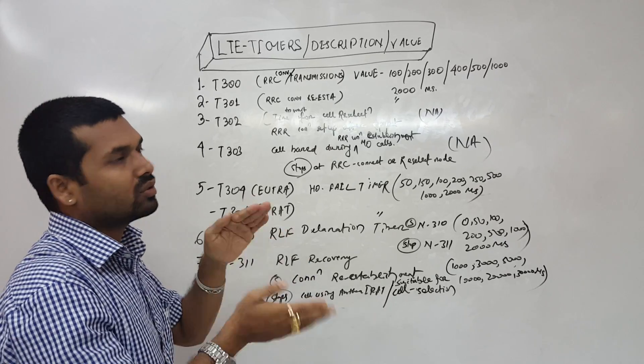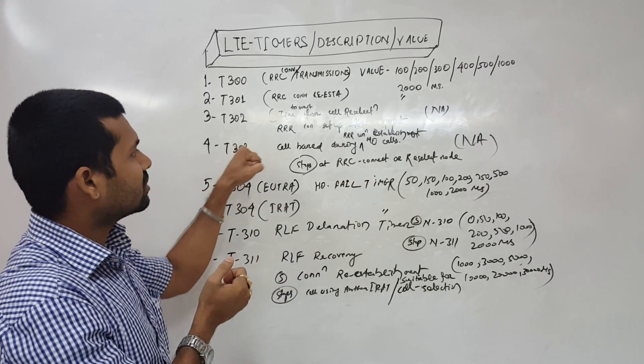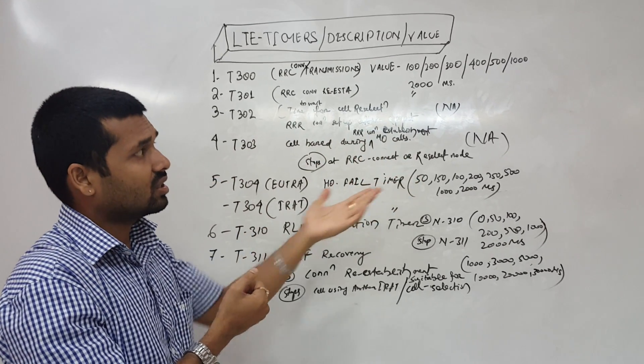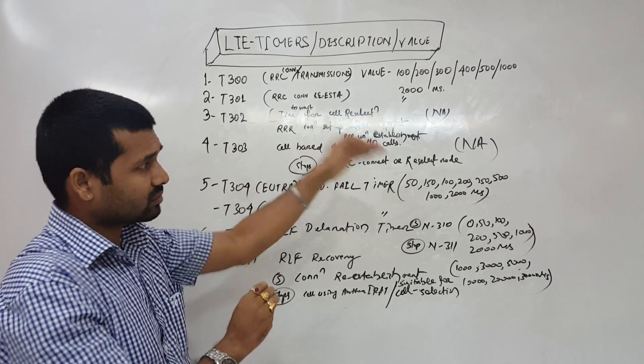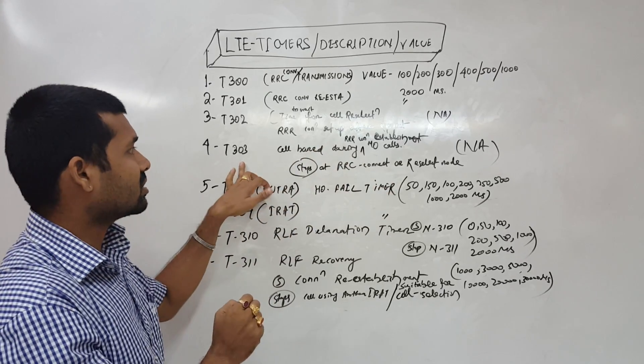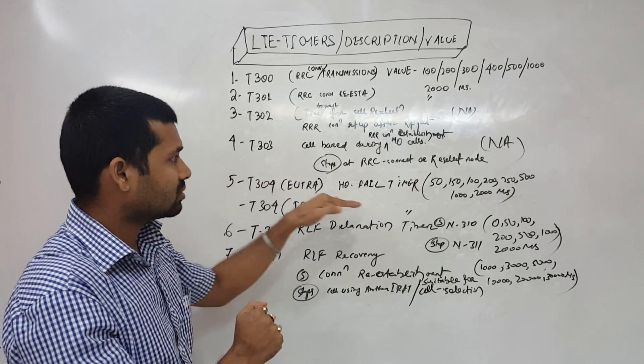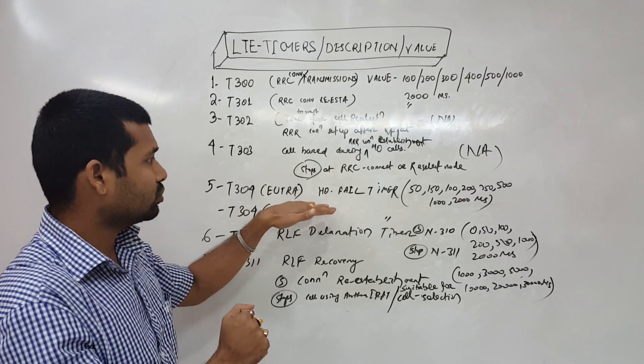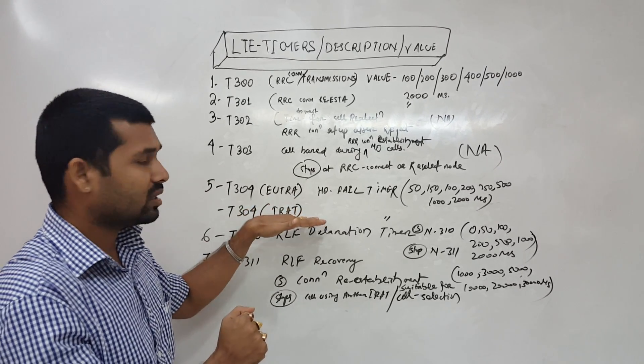So in between there will be some timing. Then T303 is cell barred during RRC connection re-establishment and when it is connected. That is T303 and T304 handover fail. T304 is divided into two: UTRAN and IRAT.